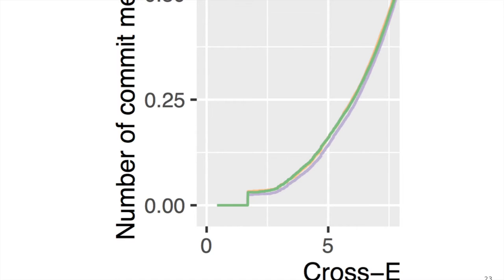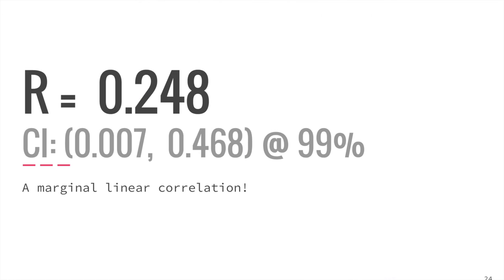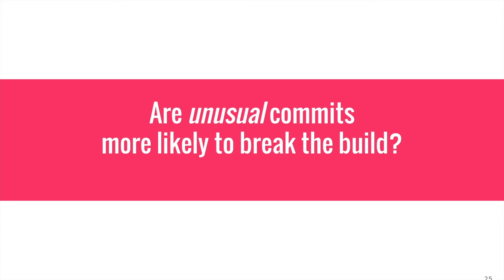Additionally, we calculated Pearson's linear correlation. We obtained a positive coefficient of correlation of about 0.248 with a 99% confidence interval that does not contain zero — a weak, but statistically significant correlation. Given this result, are unusual commits more likely to break the build? Yeah, a little bit.